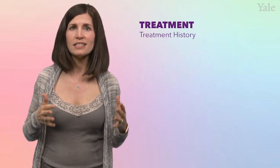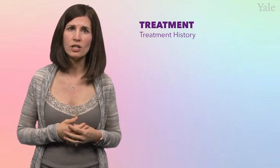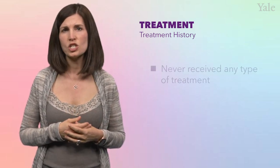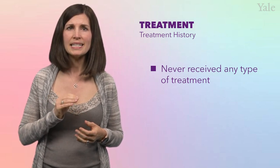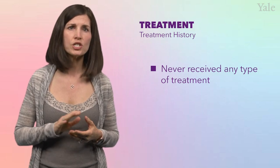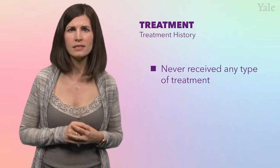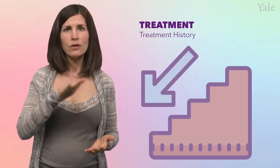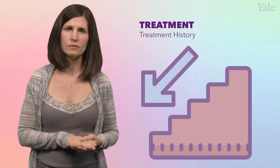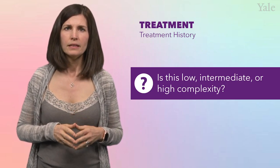Moving on to the T in our mnemonic. In the past seven years, has Annabeth ever sought out treatment? You want to know what she's tried before in order to guide your recommendation. When asked, Annabeth says that she's never received any type of treatment. Since we want to apply a stepped care approach, it's helpful to know which steps have been taken before. A stepped care approach is common for chronic diseases, in which patients step up from less restrictive steps if unsuccessful, and step down from more restrictive steps when successful. So with this answer, where does this place Annabeth?